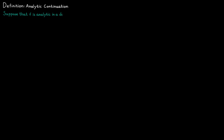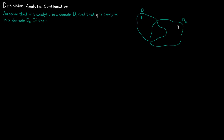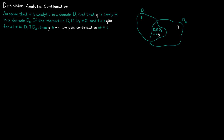Analytic continuation is a method used to extend the domain of an analytic function. The definition states that suppose we have a function F analytic in some domain D1, and a function G analytic in some other domain D2. If the intersection of these two domains is non-empty and the two functions agree for all values inside this intersection, then we say that G is an analytic continuation of F to the domain D2, and vice versa.